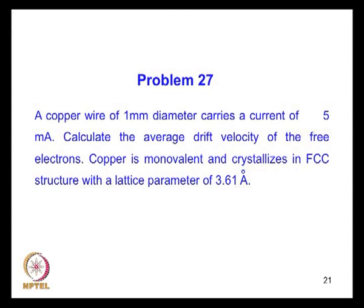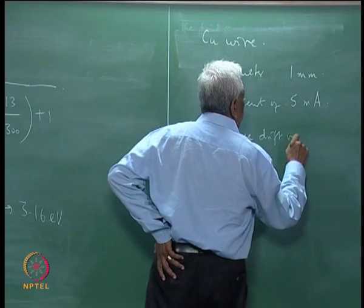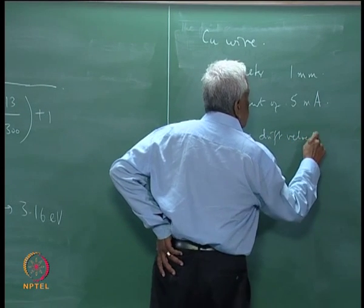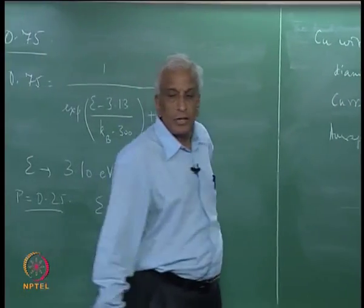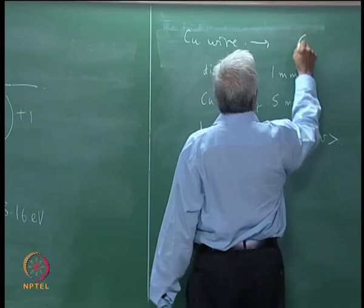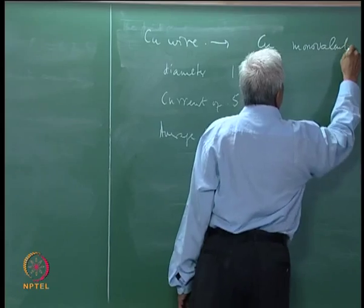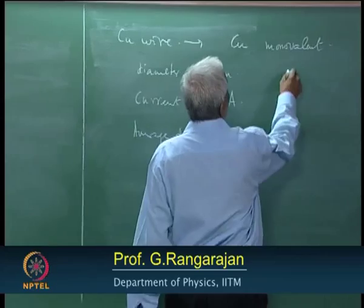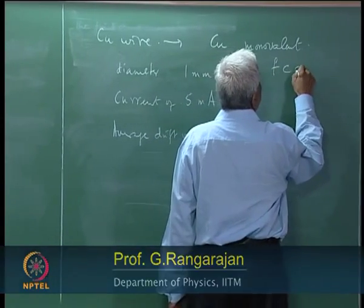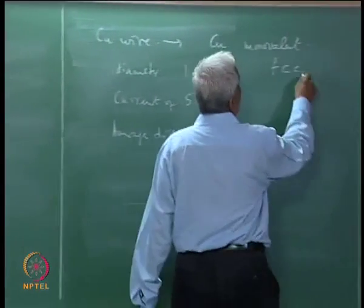Now, we are asked to calculate the average drift velocity. We are given that copper is monovalent and crystallizes in a face-centered cubic structure with a lattice parameter of 3.61 angstrom.